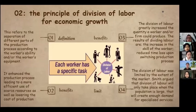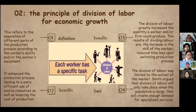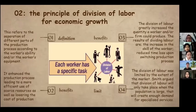Adam Smith's second contribution is the theory of division of labor. This refers to the separation of different parts of the production process according to the worker's skills and equipment. It enhanced the production process, leading to a more efficient use of scarce resources. As well as lowering the cost of production, the division of labor greatly increased the quantity of work a firm could produce. The results include an increase in the scale of work and reduced time lost when switching production processes. Smith argued that division of labor will only take place when the population is large enough to create sufficient demand for specialized services.